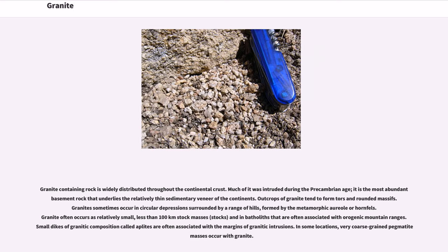Granite-containing rock is widely distributed throughout the continental crust. Much of it was intruded during the Precambrian age; it is the most abundant basement rock that underlies the relatively thin sedimentary veneer of the continents. Outcrops of granite tend to form tors and rounded masses. Stacked granites sometimes occur in circular depressions surrounded by a range of hills, formed by the metamorphic aureole or hornfels. Granite often occurs as relatively small, less than 100 km² stock masses, called stocks, and in batholiths that are often associated with orogenic mountain ranges. Small dikes of granitic composition called aplites are often associated with the margins of granitic intrusions.